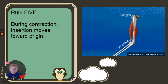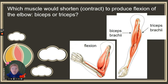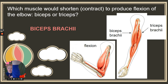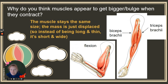Looking at this image — which muscle would shorten or contract to produce flexion of the elbow? Flexion is this movement. It would be the biceps brachii that would have to shorten to allow this to happen. Why do muscles appear to get bigger or bulge when they contract? The muscle mass stays the same — it's not getting bigger when you flex. What's happening is the mass is displaced: instead of being long and thin, they're short and wide, giving a larger appearance.